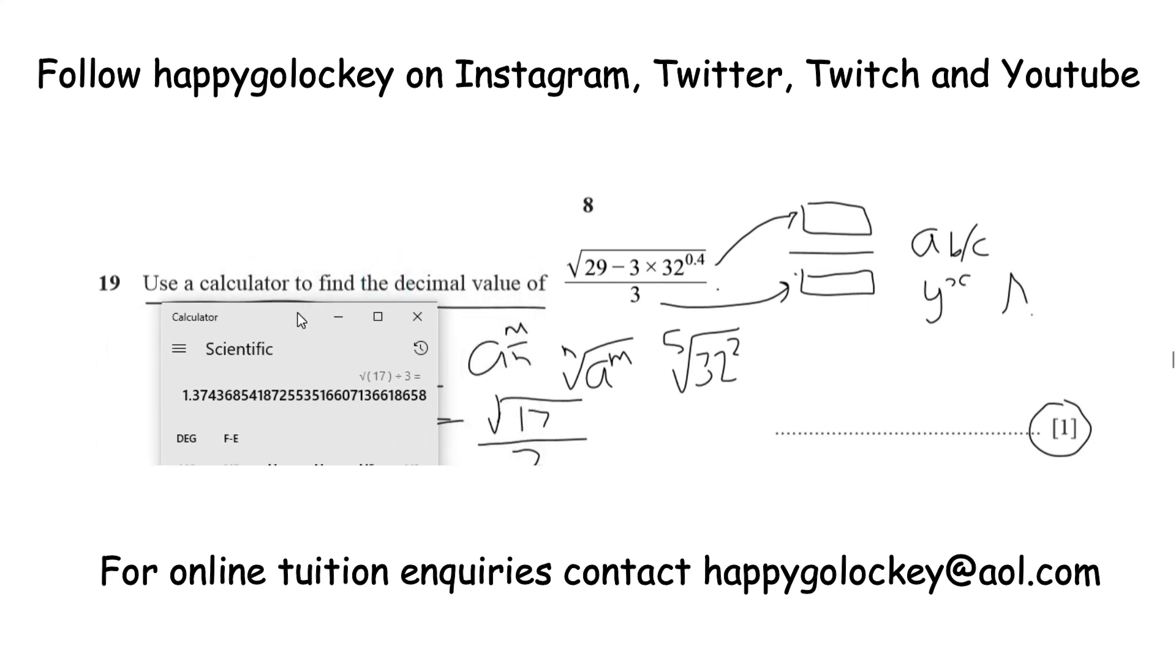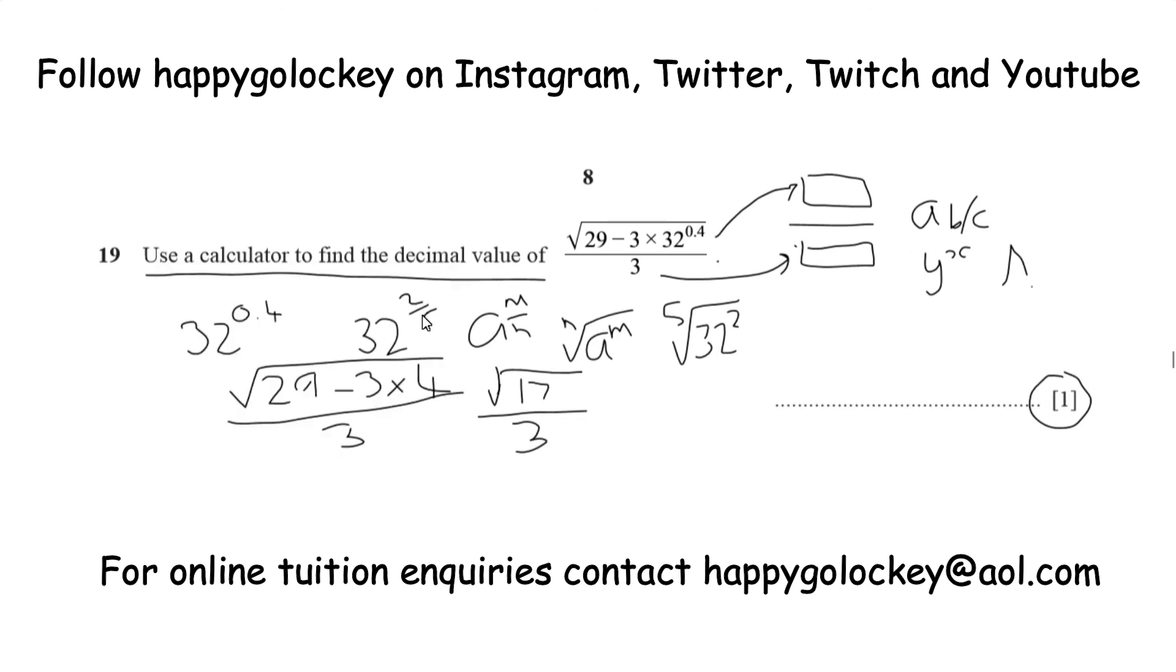Now, in these exam papers, it asks you to give your answer as a decimal to 3 significant figures. So the first 3 significant figures are the 1, the 3, and the 7. So 1.37, we don't need to round up. The answer to 3 significant figures is 1.37.